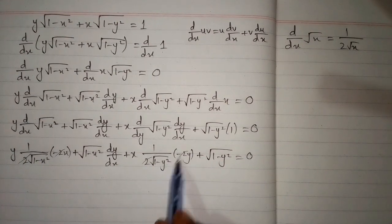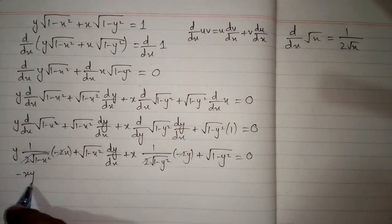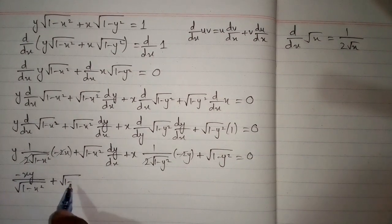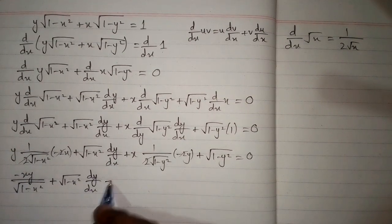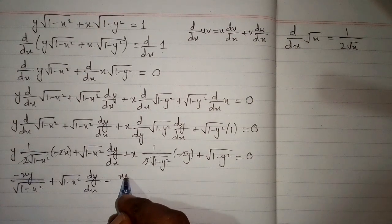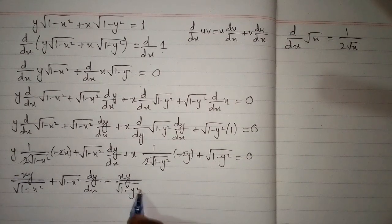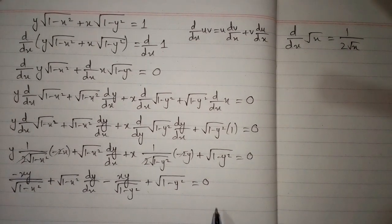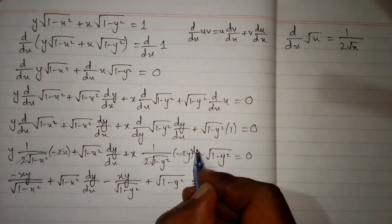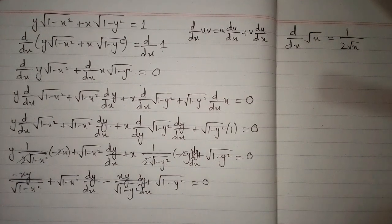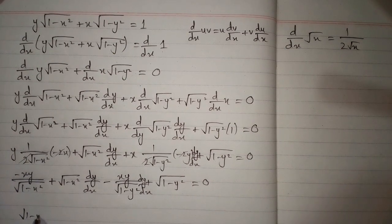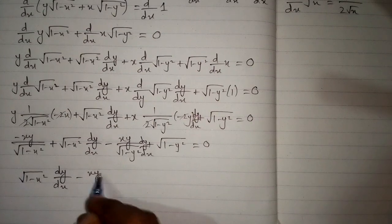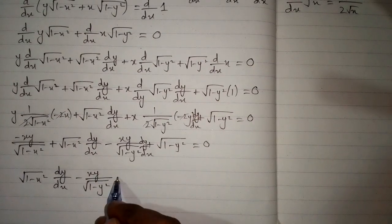Now we can cancel the 2s. So we have minus xy over square root of (1 minus x squared) plus square root of (1 minus x squared) times dy/dx, then minus xy over square root of (1 minus y squared) plus square root of (1 minus y squared), and this equals 0. Here we need to write dy/dx. We can write it as square root of (1 minus x squared) times dy/dx minus xy over square root of (1 minus y squared) times dy/dx.